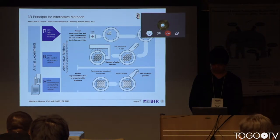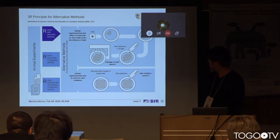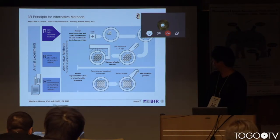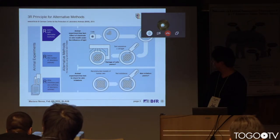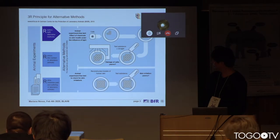Replacement aims to rely on in vitro methods or non-vertebrate animals instead of vertebrate animals such as mice, monkeys, or fish. Reduction aims to reduce the number of animals as well as to acquire as much data as possible from the experiments, as long as it doesn't imply more suffering for the animal. Finally, refinement aims to develop methods or housing conditions that will cause less suffering to the animals.